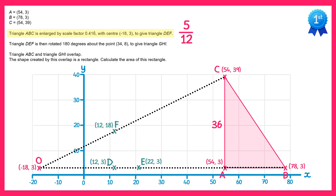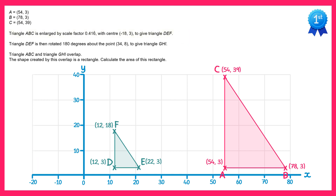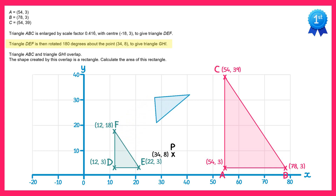So we've now found the triangle DEF. The next thing we're told to do is rotate this triangle 180 degrees about the point (34,8). Let's mark on that point and call it P. Now let's do that rotation — it's 180 degrees, so half a turn. You can see the triangle would end up here.